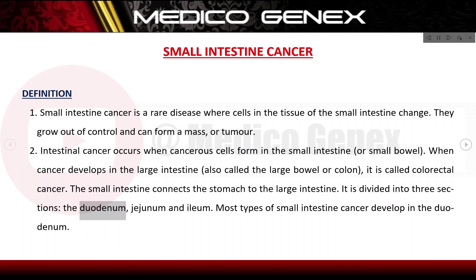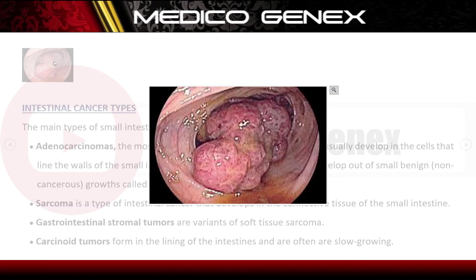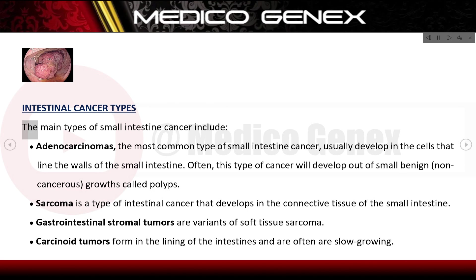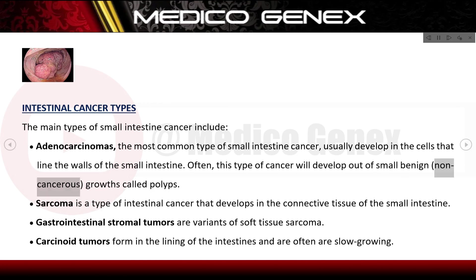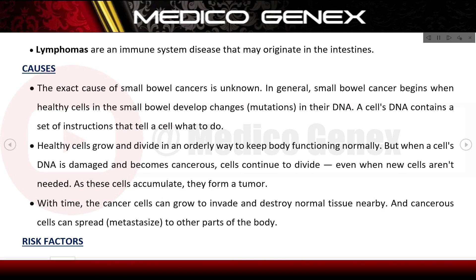The small intestine is divided into three sections: the duodenum, jejunum, and ileum. Most types of small intestine cancer develop in the duodenum. The main types include adenocarcinomas, the most common type, which develop in the cells lining the intestinal walls — often growing from benign polyps. Sarcoma develops in the connective tissue; gastrointestinal stromal tumors are variants of soft tissue sarcoma. Carcinoid tumors form in the intestinal lining and are often slow growing. Lymphomas are an immune system disease that may originate in the intestines.